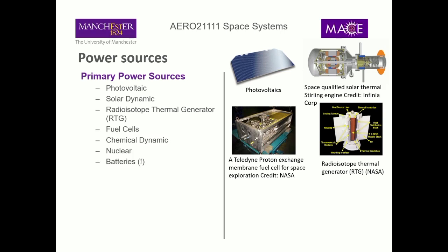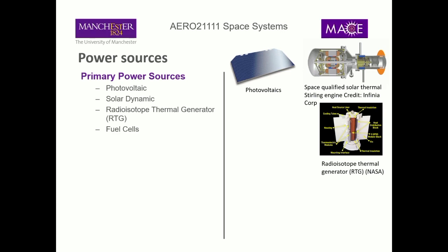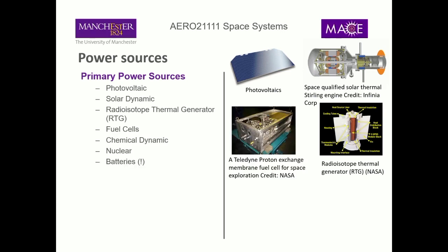Fuel cells are another power source, used quite readily on the ISS. There are also a few others: chemical, dynamic, nuclear, and batteries. Batteries are listed as a primary source if your mission is really short — a couple of hours or days — but generally we call batteries our secondary resource, our energy storage.